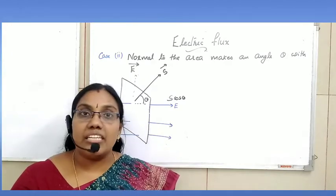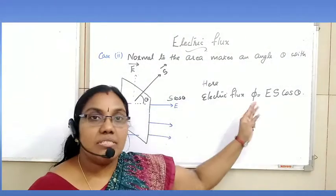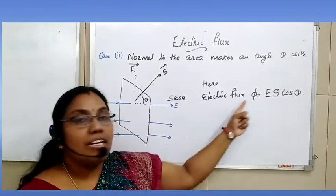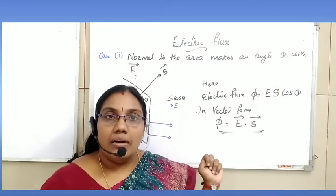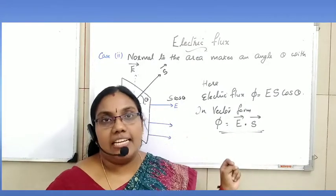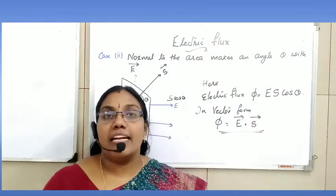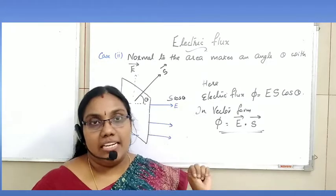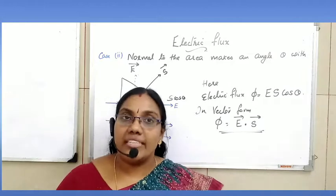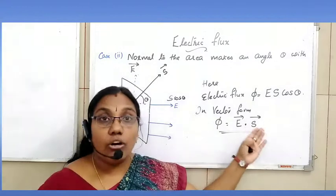So in this case, electric flux is φ = ES cos θ, because electric field and S cos θ are along the same direction. In vector form, it can be represented as φ = E⃗ · S⃗, since AB cos θ = A·B. This shows that electric field and area vector are both vector quantities, but electric flux is a scalar quantity because it is a dot product.